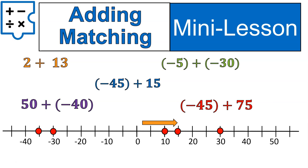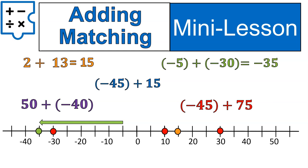2 plus 13 — that's starting at about the point 2 and adding 13, which would bring us up to 15. That's a positive plus a positive; those ones are pretty straightforward. Now let's move on to our green question. We started at negative 5 and we added negative 30, meaning that we're going 30 spaces to the left, bringing us down to negative 35. Notice we're actually joining those numbers together and keeping the sign. Keep that in the back of your mind for later.